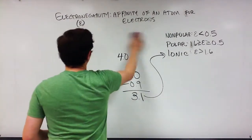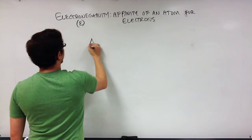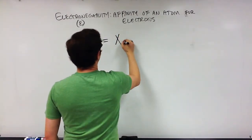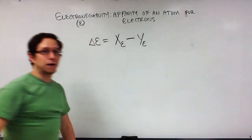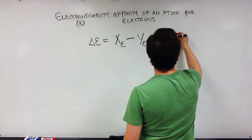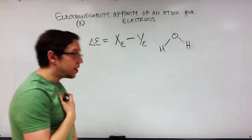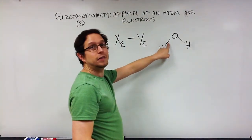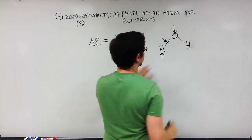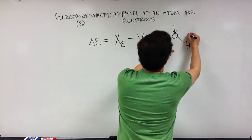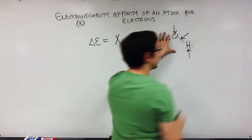The breakdown again: to calculate electronegativity difference, take the electronegativity of the higher atom in the bond and subtract the electronegativity of the other atom. Remember, if you're looking at a molecule like water — which has more than two atoms — to determine the bond type, you only look at the two atoms directly involved in that specific bond. So for one O-H bond, you look only at that oxygen and that hydrogen, ignoring the other hydrogen.